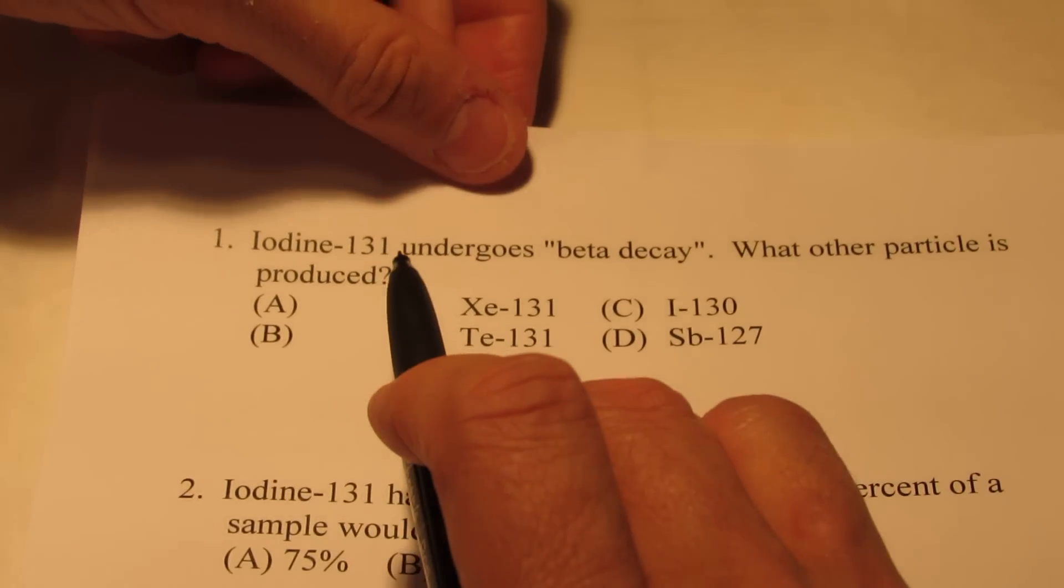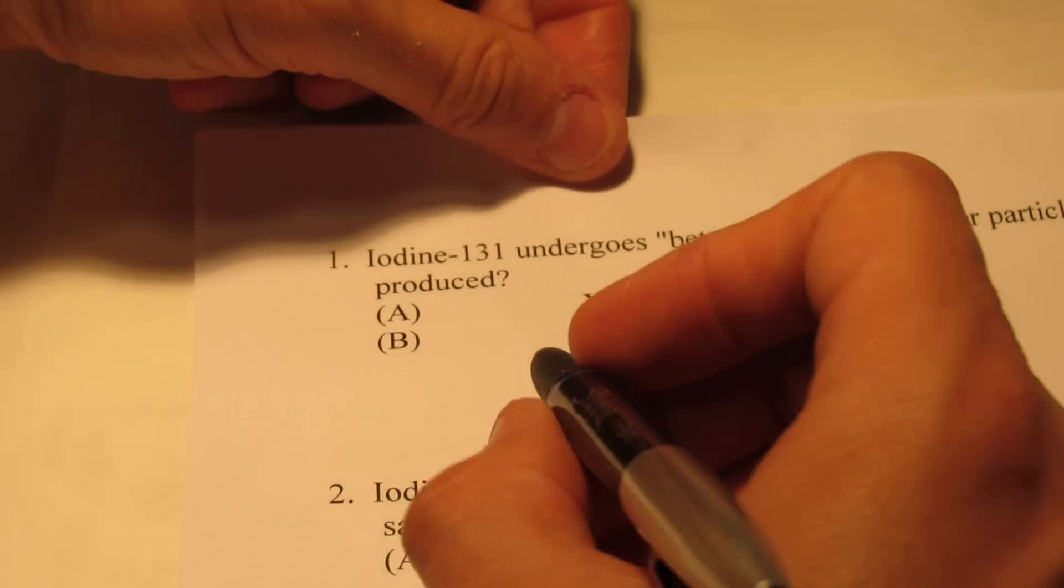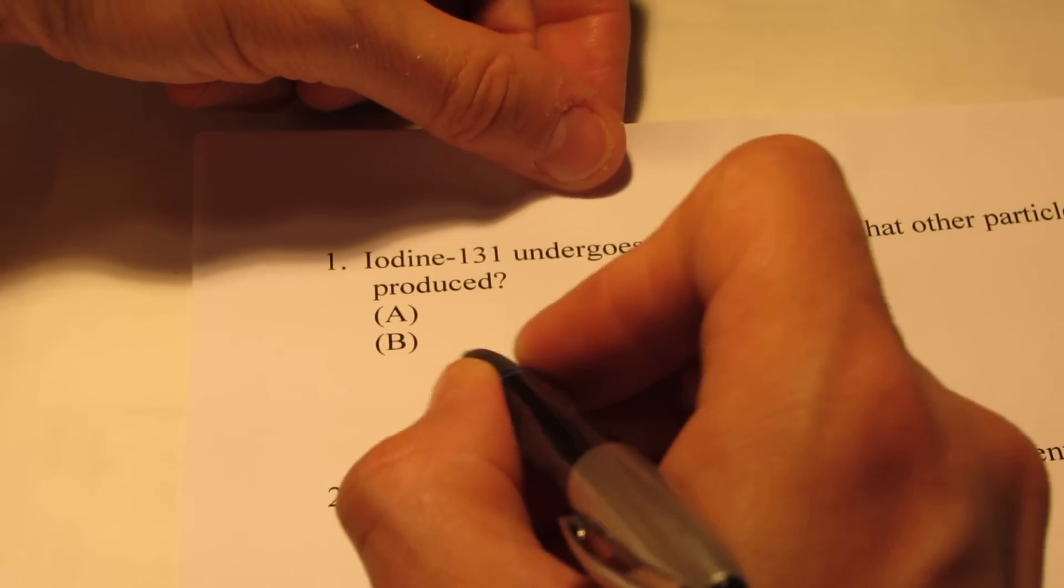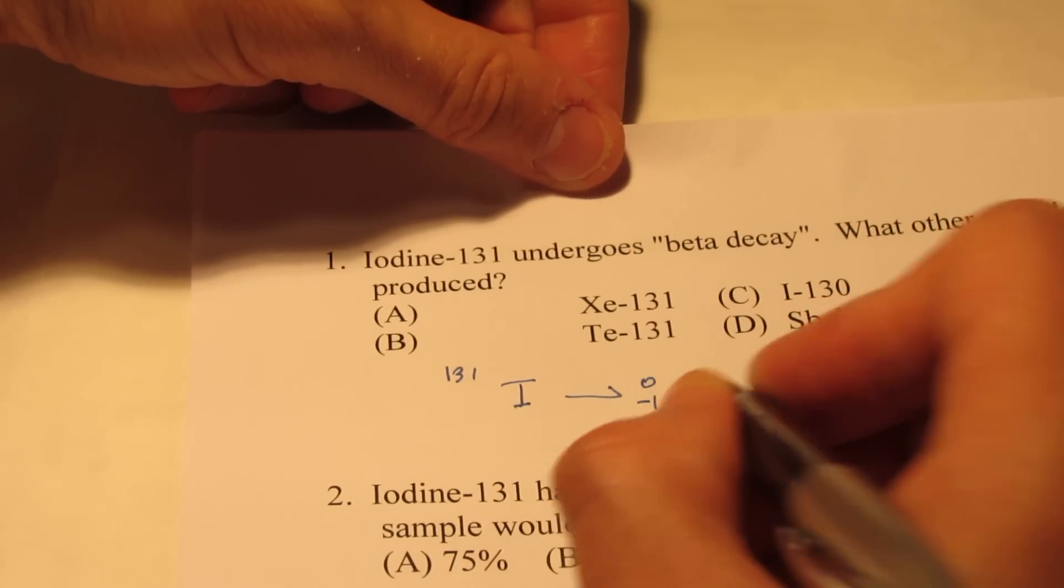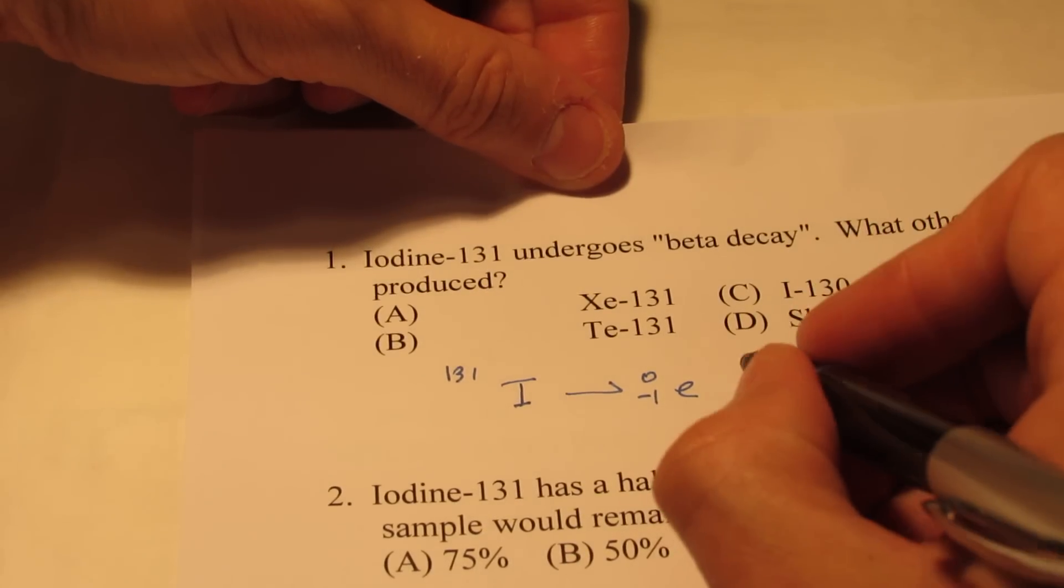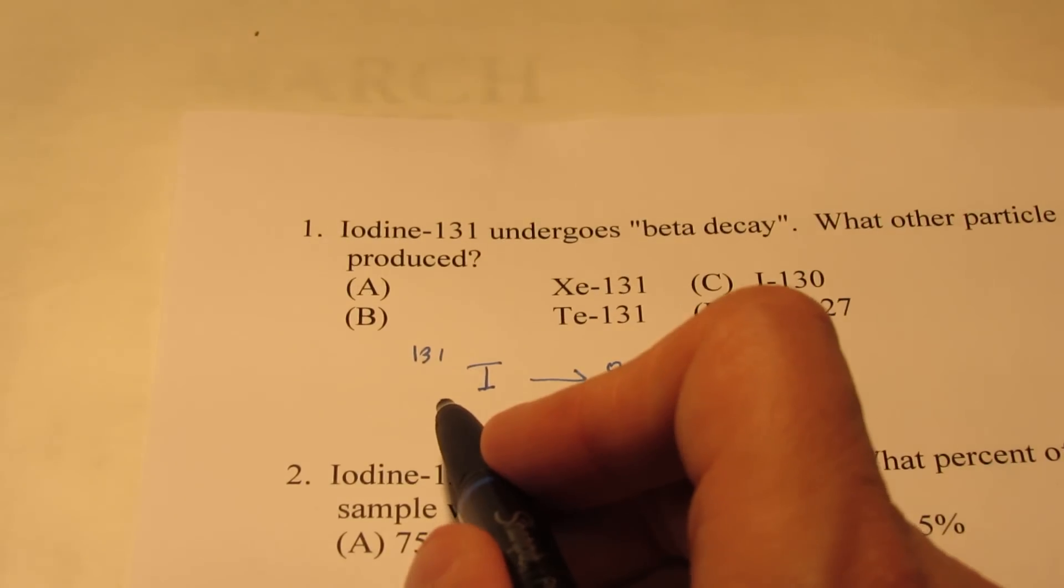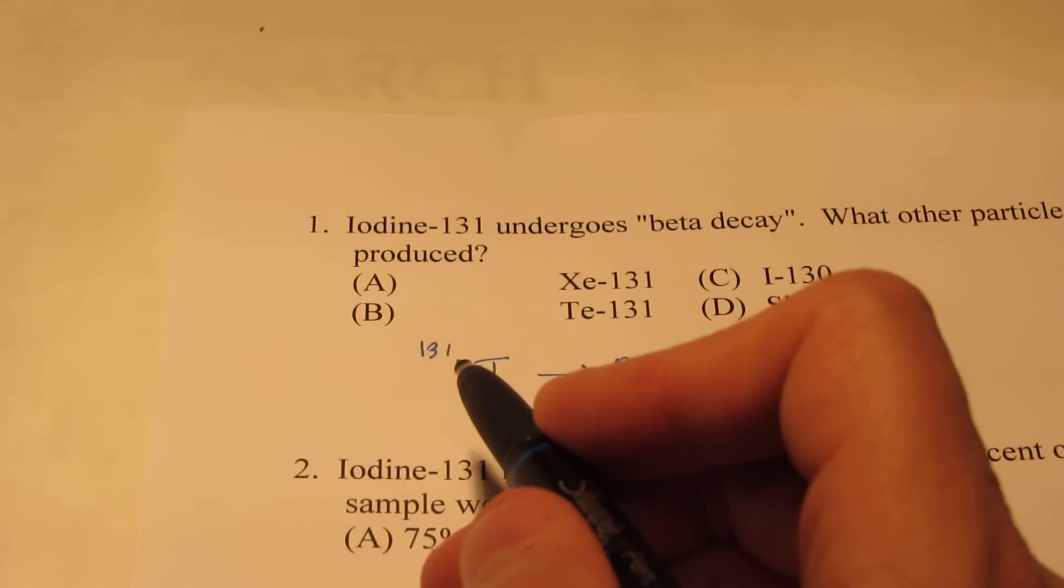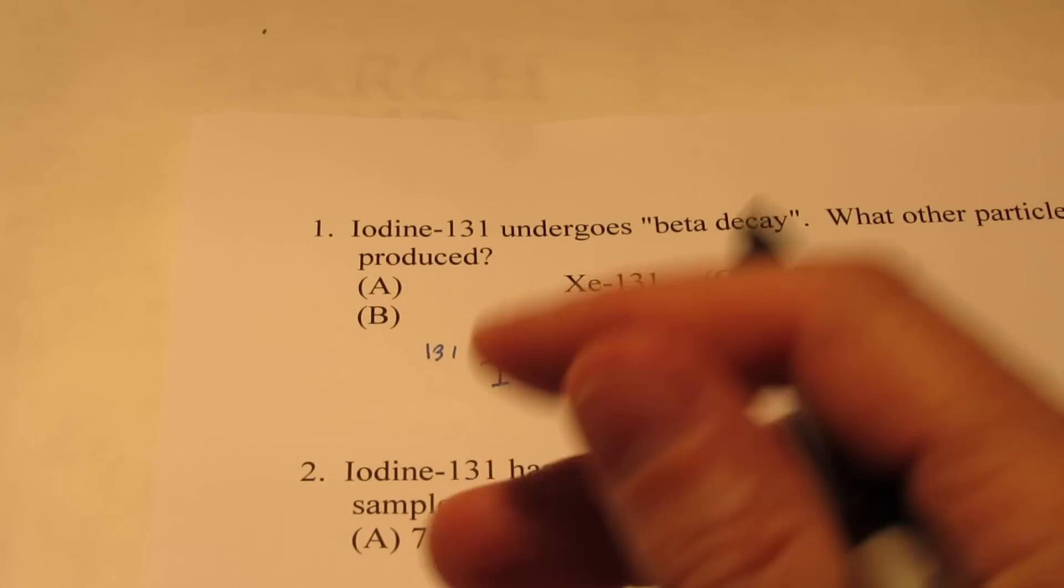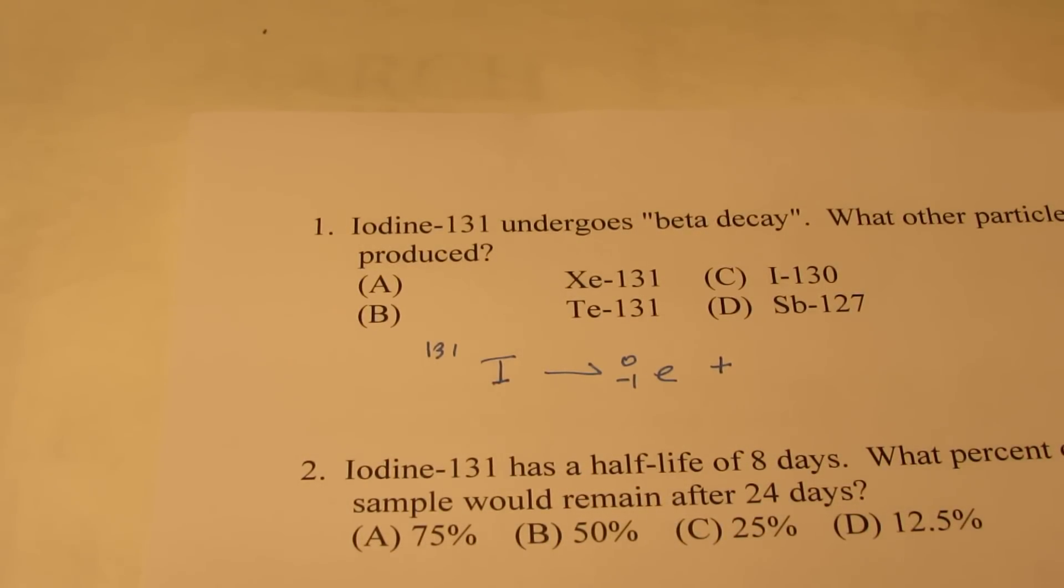Let's take a look at iodine-131. If it's a beta-emitter, what other particle is produced? So recall, we have iodine, mass number 131, and we're saying it gives off a beta particle. What other particle is produced? Well first, let's look up the atomic number for iodine. So if we look on our periodic table, iodine's atomic number is 53.